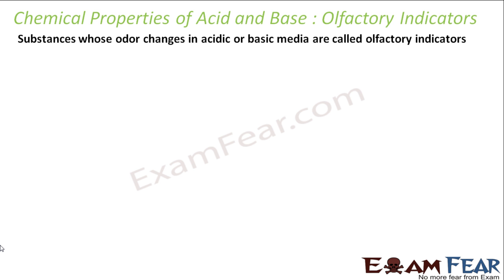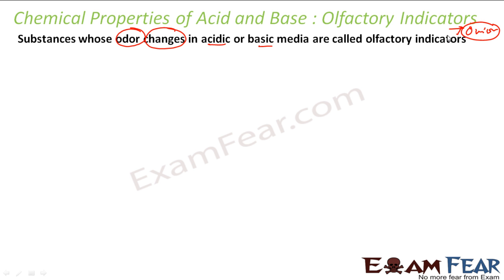We will also do some activity on olfactory indicators. As I told you, olfactory indicators are substances which change their odor when you put acidic or basic material on them. For example, onion is one olfactory indicator which changes its odor when you put some basic substance on it — the smell goes off. We will do some activity on that, because chemistry is more about learning from experiments.